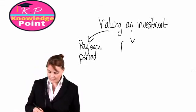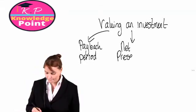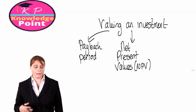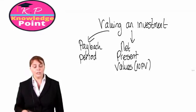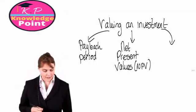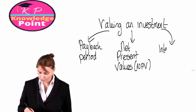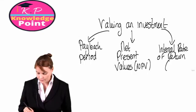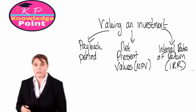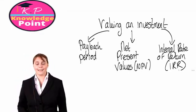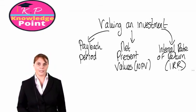The second technique we are going to look at is net present value, shortened to NPV. Net present value looks at what is the value in today's terms of a particular investment. Our final technique will be internal rate of return, shortened to IRR. These are the three core techniques we see in F2 for valuing a particular investment.